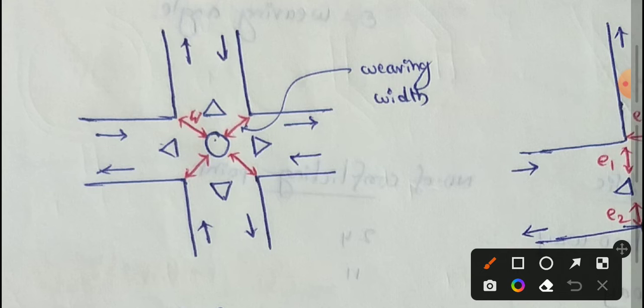The width of road perpendicular to weaving length - weaving length and weaving width are perpendicular to each other.